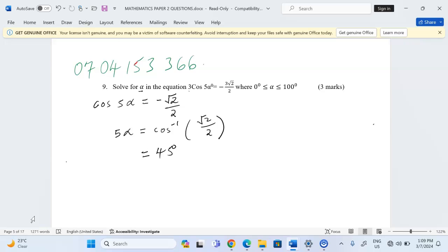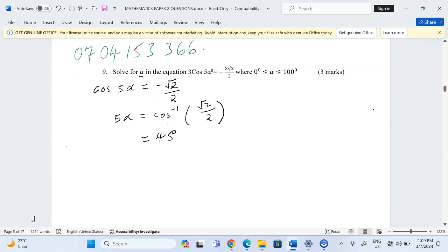But now our interest is not on this acute angle. The value of 5α is going to be this acute angle in the quadrants where cosines are negative. Because of this sign, we need the value of this acute angle in the quadrants where cosines are negative. Therefore, 5α will be given by...